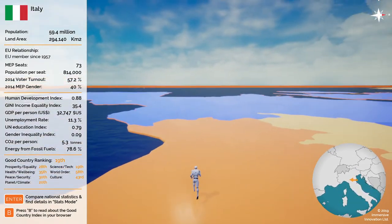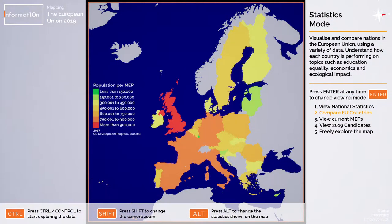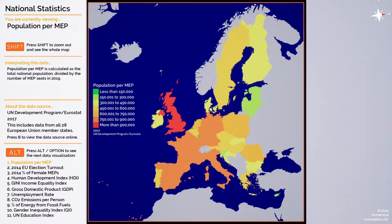I'm going to press enter to switch into mode number two: statistics mode. Whereas country mode focuses on one country at a time, statistics mode allows you to see the whole map and compare between different nations. It starts by showing population per MEP on the left hand side. Pressing control changes the info panel, which tells me what statistic I'm currently exploring, gives some information about how to interpret the data, and information about the data source. Underneath that is a list of the different statistics available, and using the alt key I can cycle through them.